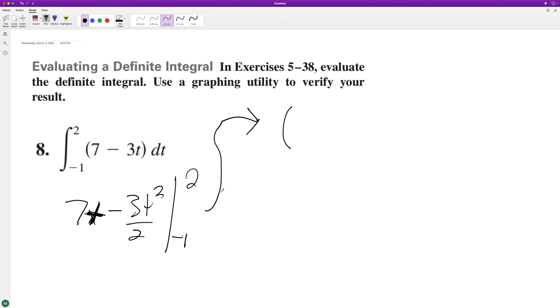So it's gonna be 7 times 2 minus 3 times 2 squared, so that's 4 over 2, minus negative 7 minus 3 over 2. Because t squared, negative 1 squared, is just 1 times 3 halves, which is 3 halves.